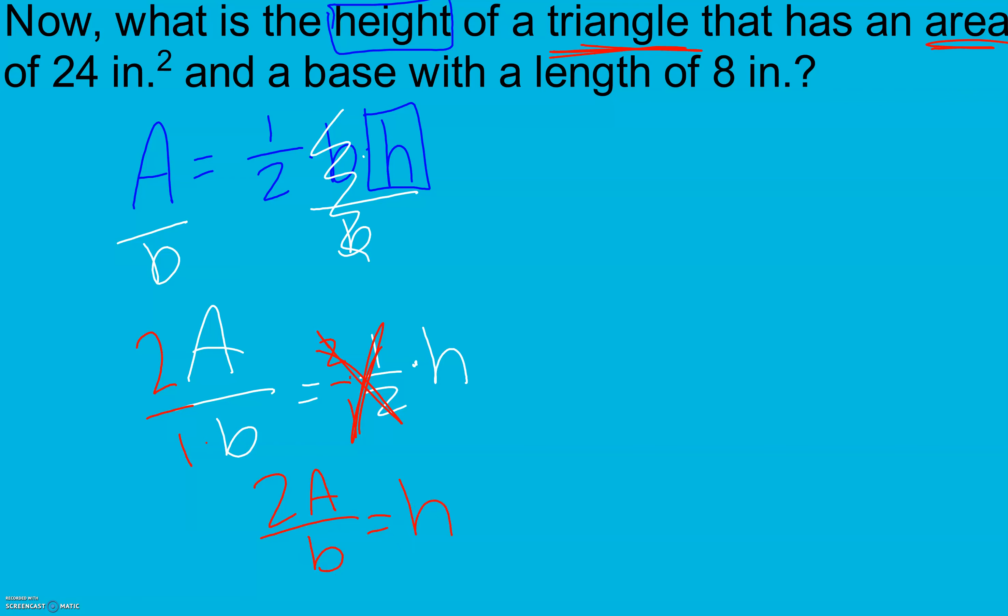So the relationship of area of a triangle to its base and its height here can also be written as 2 times our area divided by our base is going to give us our height. So we've solved for height and now we can plug in what we know.